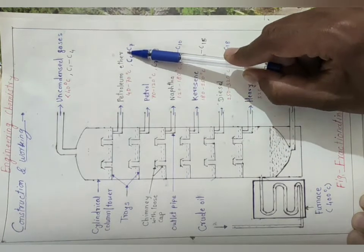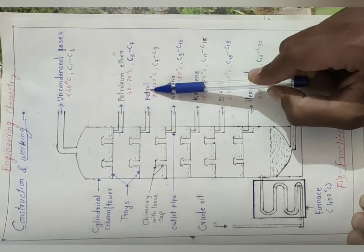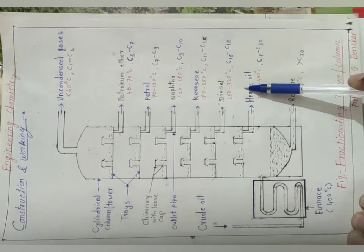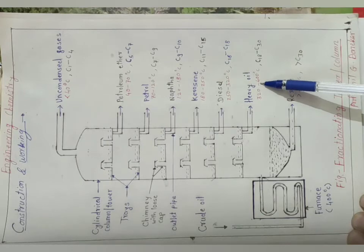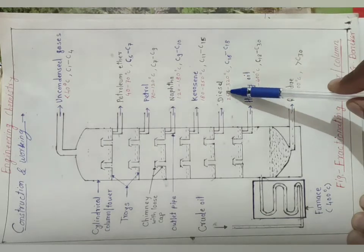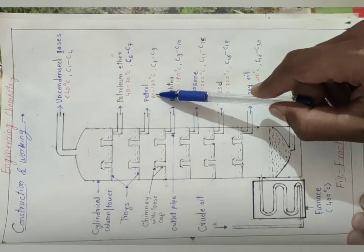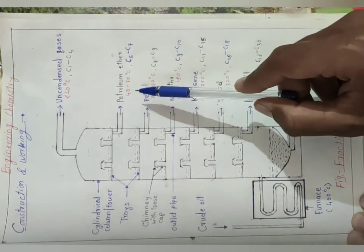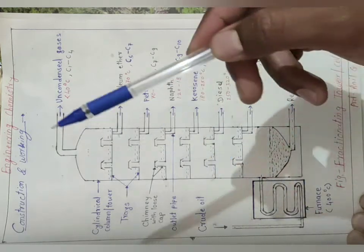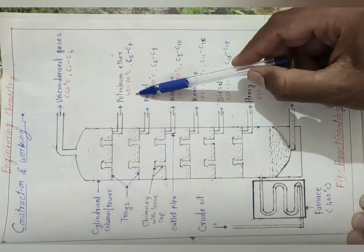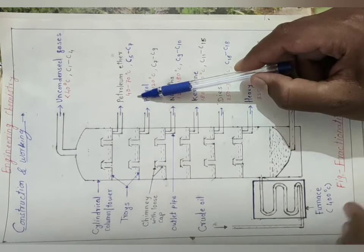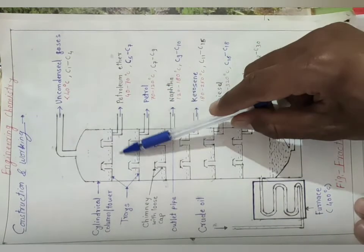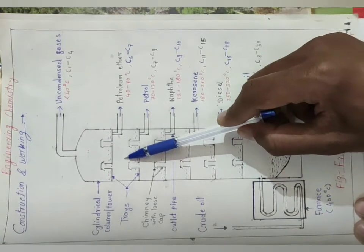Second one, petroleum ether - you can see temperature range. Then petrol, then naphtha, then kerosene, then diesel, then heavy oil. You can check here the boiling point of these fractions. If boiling point is low, boiling point is low means what? Liquid converts into vapor fastly. Liquid converts into vapor fastly, but vapor to liquid requires more time. So because of that reason, it gets condensed at the top, means at upper portion.